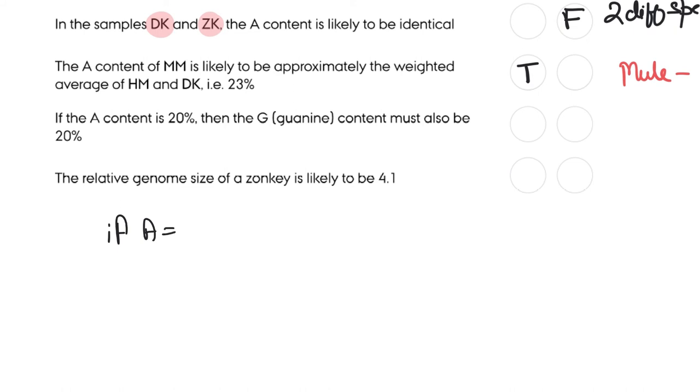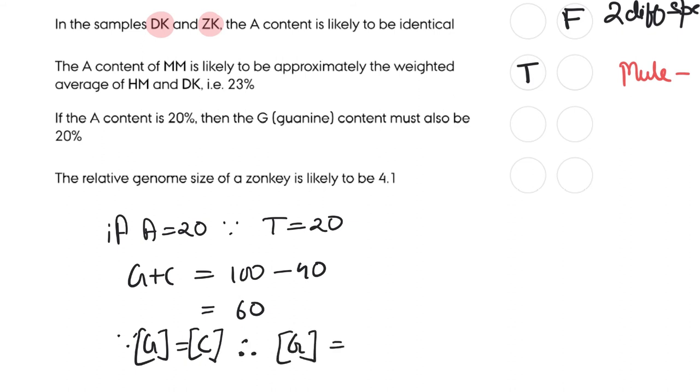If the A content is 20%, then the G content must also be 20%. Well, if A = 20, T = 20, that means total 40. 100 - 40 = 60. So G content equals C content, which is 60/2 = 30. So this is straight away false.